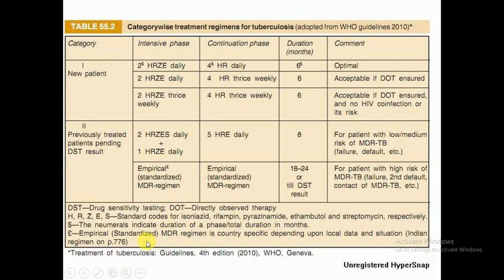For new patients (Category 1), the intensive phase is 2HRZE daily, followed by a continuation phase of 4HR daily — isoniazid and rifampicine — for a total duration of six months. This is the optimal regimen. An empirical standardized MDR regimen is country-specific depending on local data and situation.